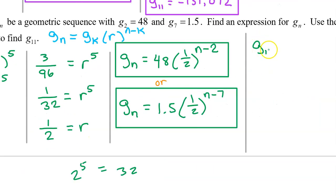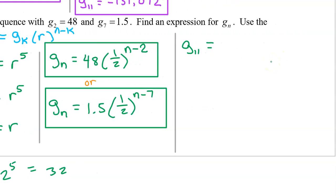Now it's time to find g11. And we can use either one of these to do that. I'm actually going to use the second equation. Because the 1.5, that's 3 over 2. That's smaller than this 48. And when I do the 11 minus 7, that's going to give me a smaller exponent. So I think this will be easier. So g11 will equal 1.5. And I will go ahead and write 3 over 2. Times 1 half to the 11 minus 7 power. So that's the 4th power.